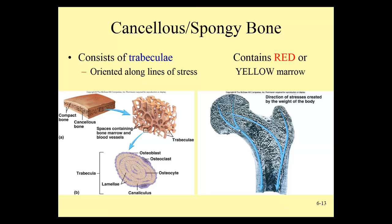What we find in the spongy bone spaces is red marrow, which contains blood cells — red blood cells, white blood cells, and platelets. We always find red marrow in these spongy bone spaces at the ends of long bones as well as in the flat bones of the skull, sternum, and hip.